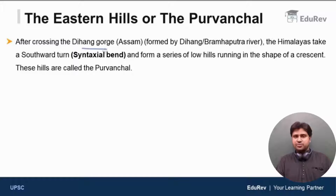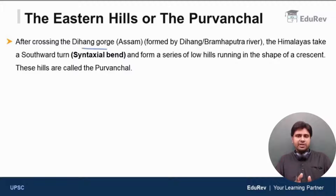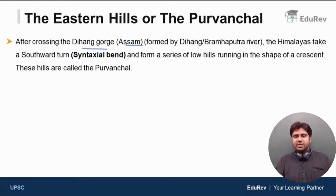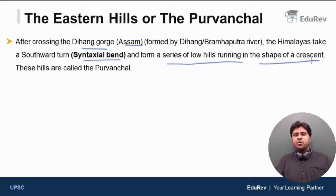After crossing the Dihang Gorge — Dihang being another name for the Brahmaputra river — a gorge being a very steep valley formed by a river, so the Dihang Gorge is a steep valley formed by the Brahmaputra in Assam — the Himalayas take a southward turn. We call this the Syntaxial Bend, and they form a series of low hills running in the shape of a crescent.